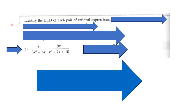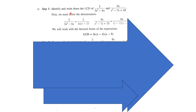Let's do the second example. We're going to find the LCD of each pair of rational expressions. The first one is 2 over 3x squared minus 6x, and the second expression is 9x over x squared minus 7x plus 10. We're going to factor the denominators. So 3x squared minus 6x factors into 3x times x minus 2. And x squared minus 7x plus 10 factors into x minus 2 times x minus 5. The least common denominator is 3x times the quantity x minus 2 times the quantity x minus 5.